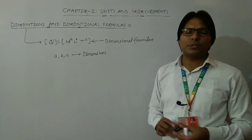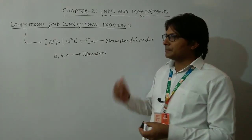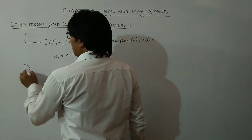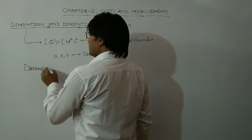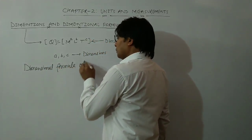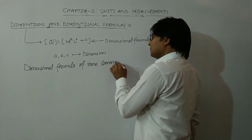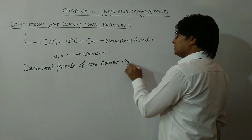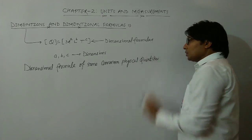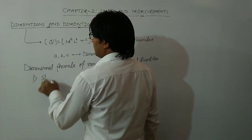Now let us try to write the dimensional formulas of some very common physical quantities which we use on a regular basis in physics. The very first quantity we are going to start with is speed or velocity.